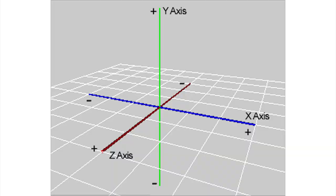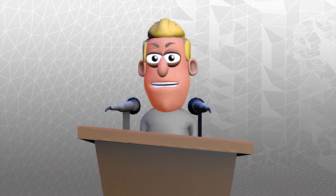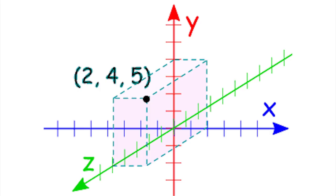These represent the width, height, and depth respectively. The coordinates for a point are written numerically in the order of x, y, and z, and look something like this.